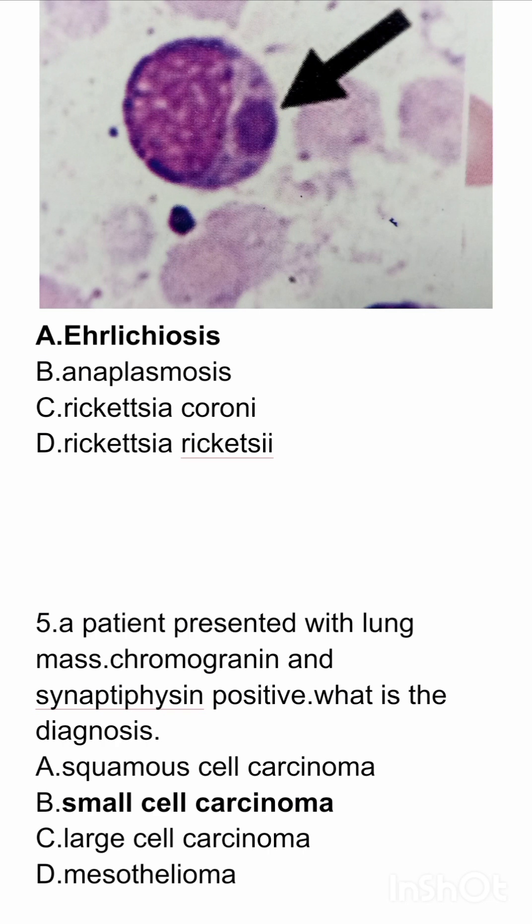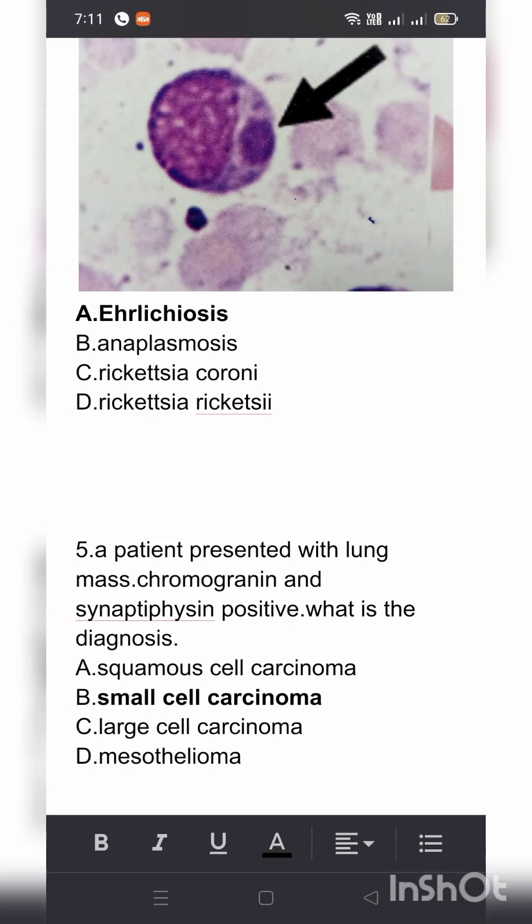A patient presented with a lung mass; chromogranin and synaptophysin positive. What is the diagnosis? Options are squamous cell carcinoma, small cell carcinoma, large cell carcinoma, mesothelioma. The answer here is small cell carcinoma.